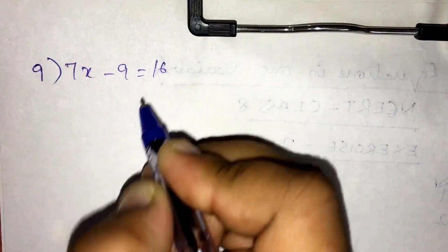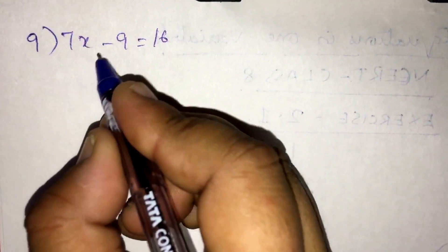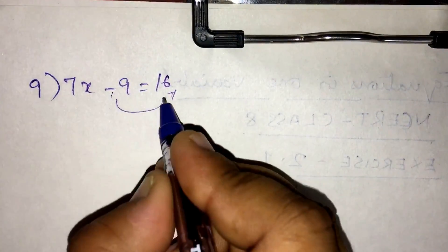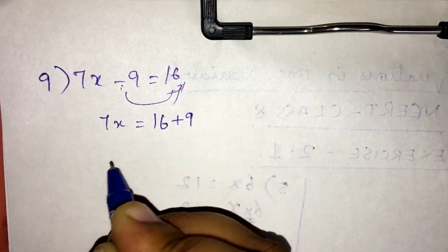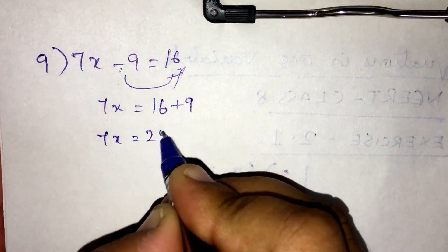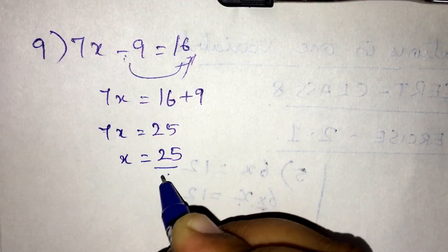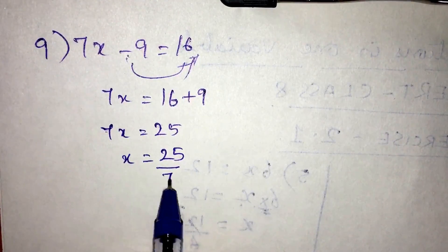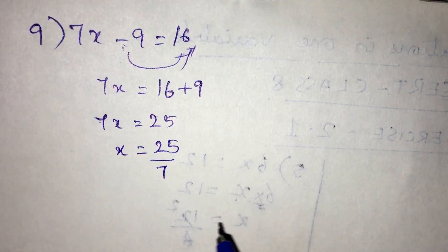Sum number 9: 7x minus 9 is equal to 16. Taking the 9 to the other side gives 7x equals 16 plus 9, so 7x equals 25. The value of x will be 25 divided by 7, because the 7 goes to the denominator on the other side. So x equals 25 by 7.